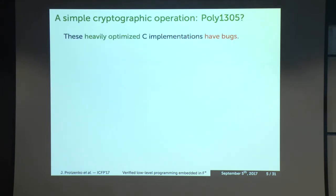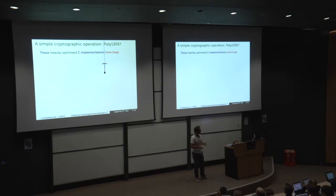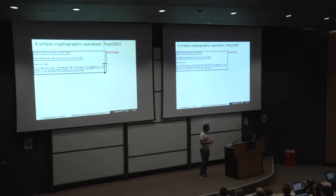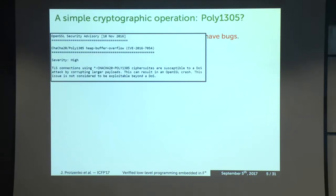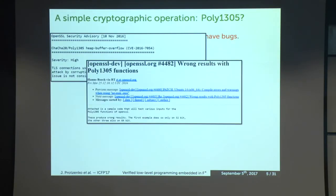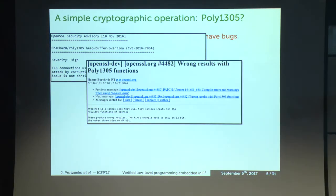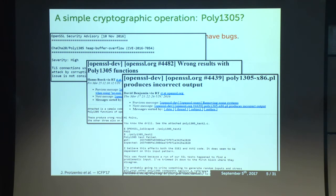As you may have guessed, these implementations have numerous bugs. There are buffer overflows, high-severity CVEs — about as bad as it gets — but there are also correctness bugs where people thought they had a super-optimized implementation and actually got the carry multiplication wrong, so the thing doesn't even give the correct result. And that's where verification comes in, naturally.